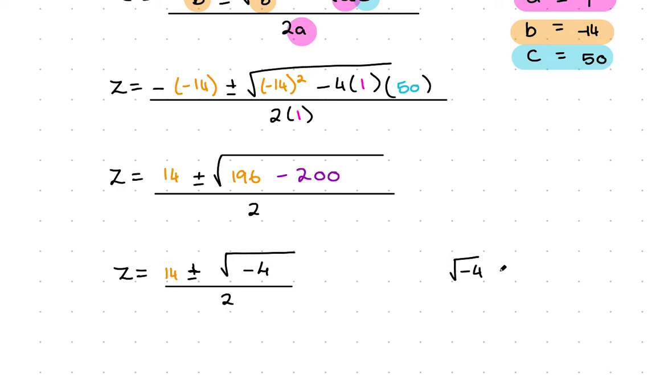I break it into the real part and the imaginary part. The square root of 4 is 2, and the square root of minus 1 is i. I can replace the square root of minus 4 with 2i.